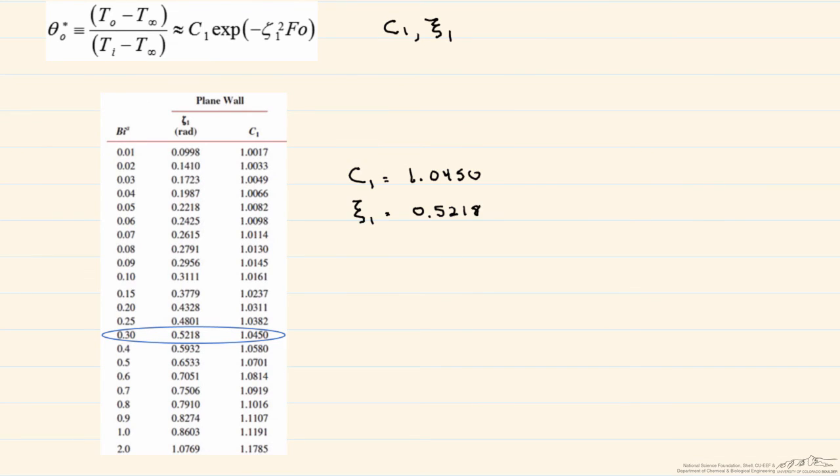And so when we put our Fourier number and our C1 and our eigenvalue into the above equation, what we end up with is that the temperature at the midplane is equal to 350 degrees C. That is not the 500 that we need, so that means that we have to solve for the time that it takes to get to 500.